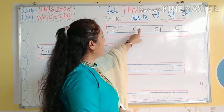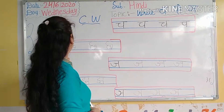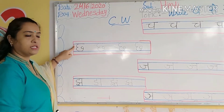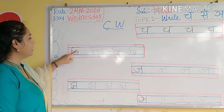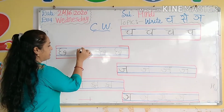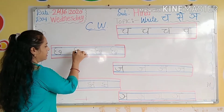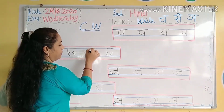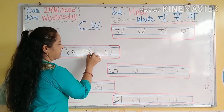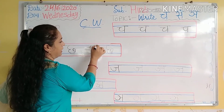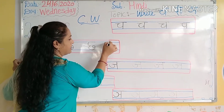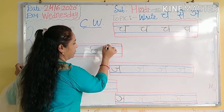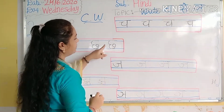Next — chh se chhat. Kya hai ye? Chh se chhat. Chh se aur kya hoga? Kids, tell me — chh se chhatri hoti hai. Kya hota hai? Chh se chhatri. Chh se chhat. Chh se chhatri.